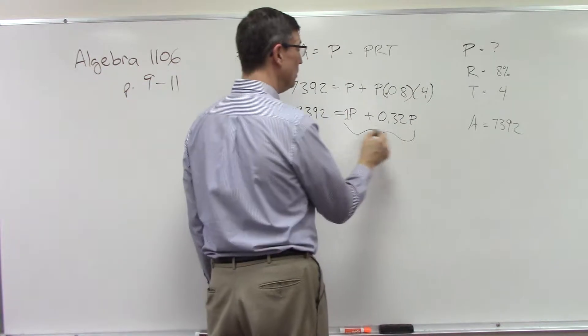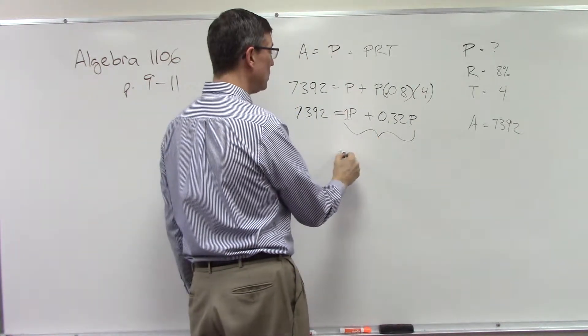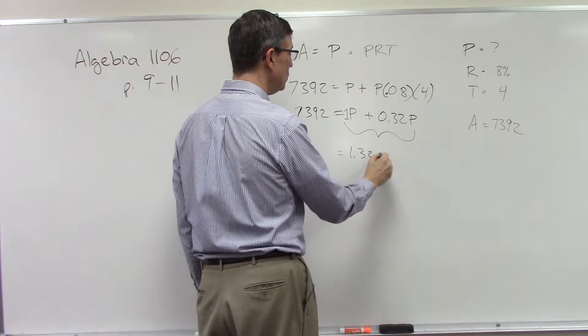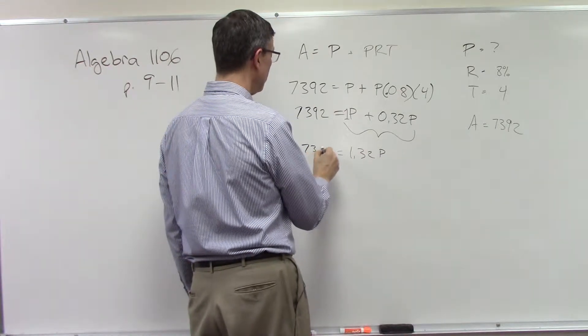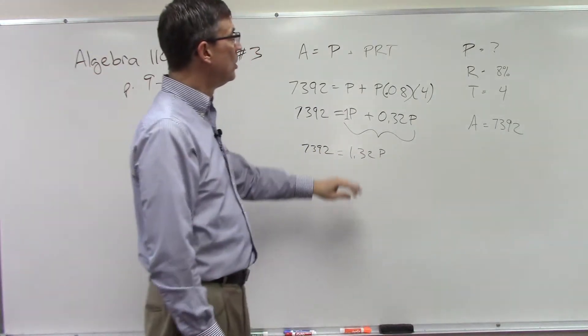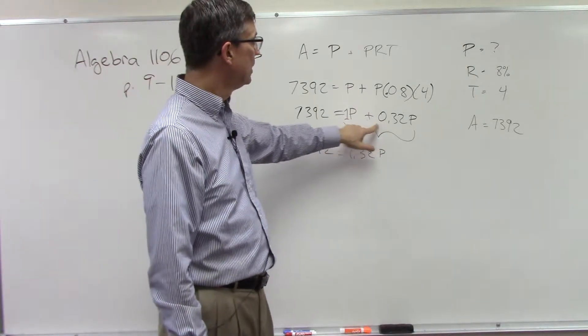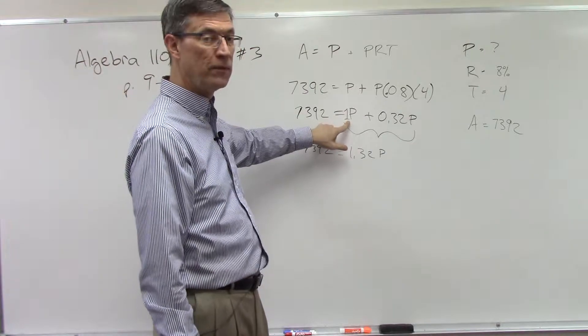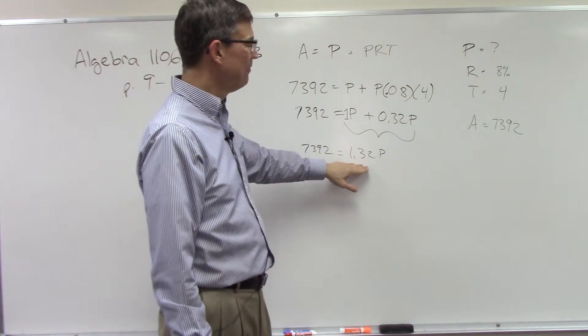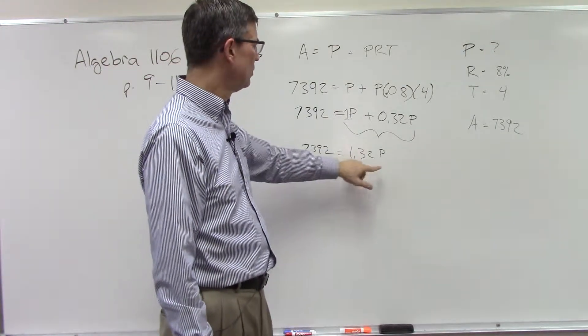These are like terms, they're both P's, so I can add them and get 1.32P equals 7392. That's the trick right there that I think some students might get stuck on, is remembering that the P has a coefficient of one. Once you add that, the last step is easy.